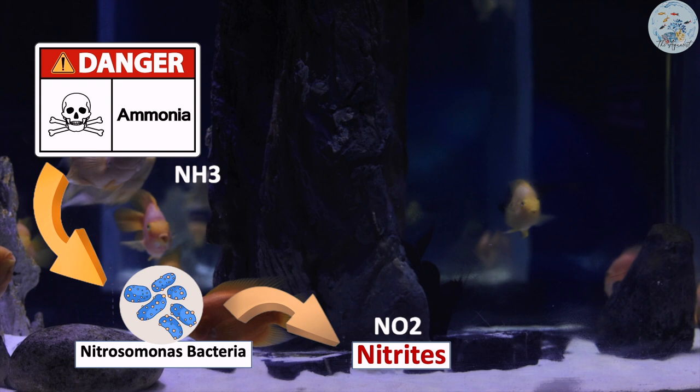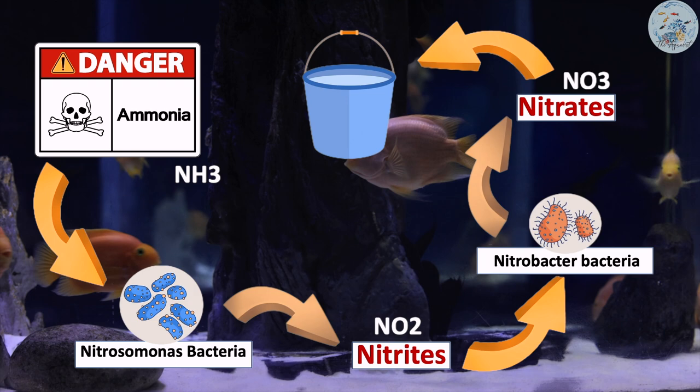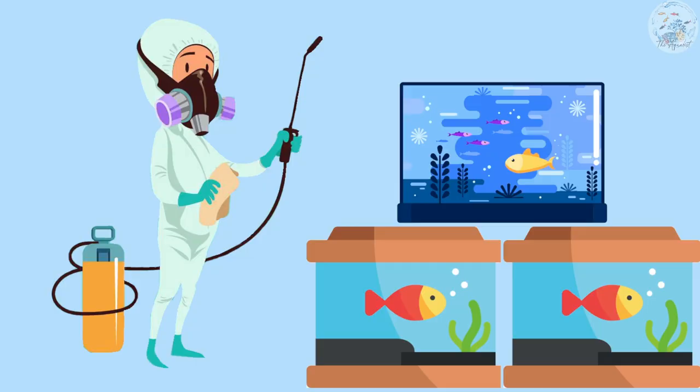Here comes the role of another bacteria called the nitrobacter bacteria. This bacteria will convert the nitrites into nitrates, and the fish can live with nitrates in the water column for a few days, until you remove the excess nitrates through a water change. So after explaining the nitrogen cycle, let's return back to Mr. Clean.